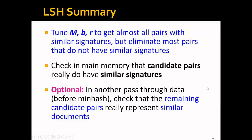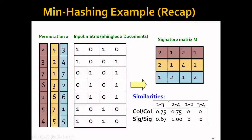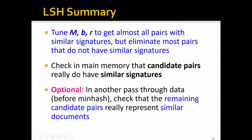To summarize LSH, we have three steps. First, tune M, B, and R to get almost all pairs with similar signatures but eliminate most pairs that do not have similar signatures. Second, check in memory that the candidate pairs really do have similar signatures. Optionally, in another pass through the raw data — the high-dimensional data before minhash — check that the remaining candidate pairs really represent similar documents. This is because in our earlier small example, the Jaccard similarity is not exactly the same as the signature similarity, so it is good to go back and check the raw document.